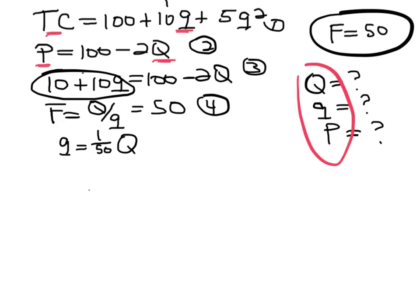That will be 10 + 0.2Q, and that's going to be equal to 100 - 2Q. Now this whole thing is in terms of big Q.